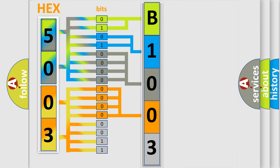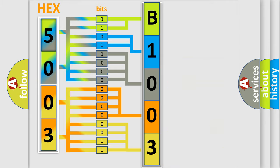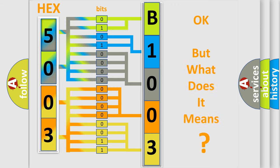A single byte conceals 256 possible combinations. We now know in what way the diagnostic tool translates the received information into a more comprehensible format. The number itself does not make sense to us if we cannot assign information about what it actually expresses.